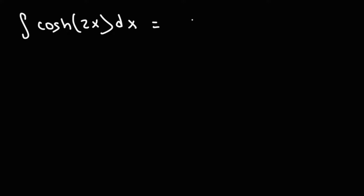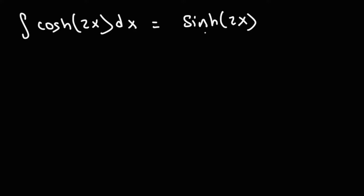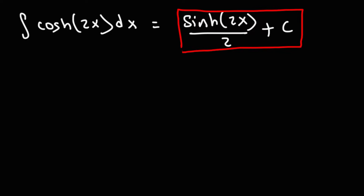The integral of hyperbolic cosine is going to be hyperbolic sine of 2x. This is a linear function, so all we need to do is divide our answer by the derivative of this linear function. The derivative of 2x is 2, so the answer is one-half hyperbolic sine of 2x plus C.